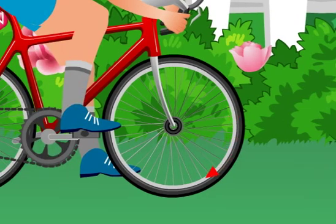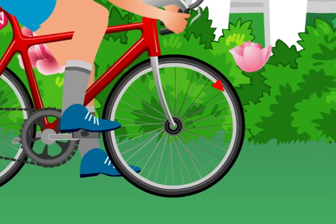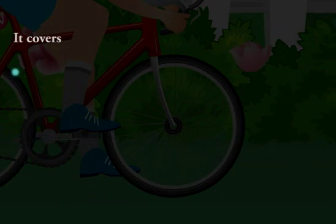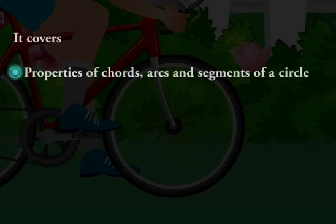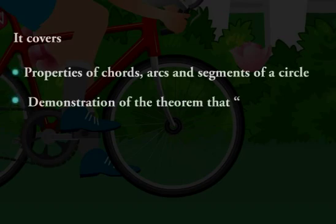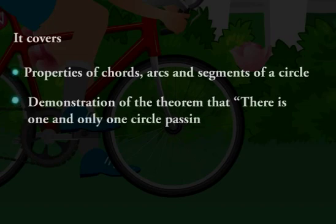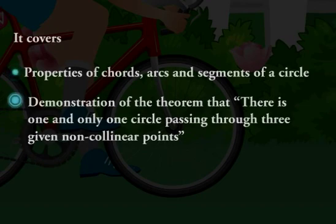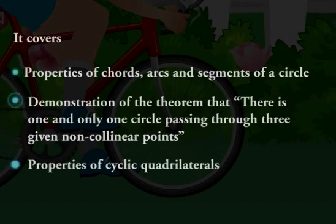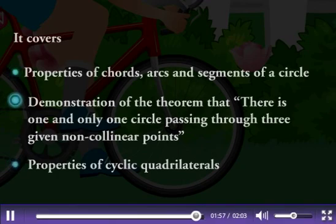Although a circle is a simple curve, yet it has many attributes and concepts associated with it. So let me be specific and tell you what you are going to study in this chapter. It covers properties of the theorem that there is one and only one circle passing through three given non-collinear points, and properties of cyclic quadrilaterals. Now you know how important the circle is, and it is time to study the properties of its various attributes.